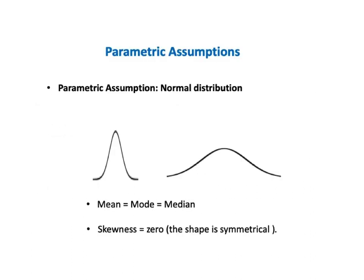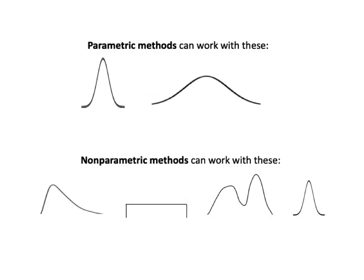The most common parametric assumption is that a population or process from which the sample or samples are drawn must have properties which are at least roughly normal. In distributions like those shown here, the mean equals the mode, which also equals the median, and the skewness equals 0 — that is, the shape is symmetrical. Nonparametric methods don't have those requirements on the data.